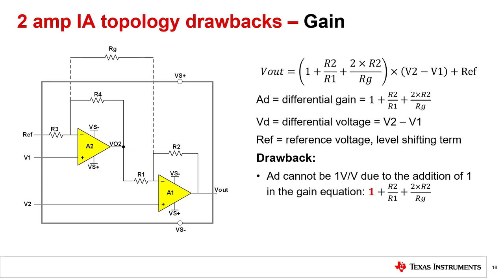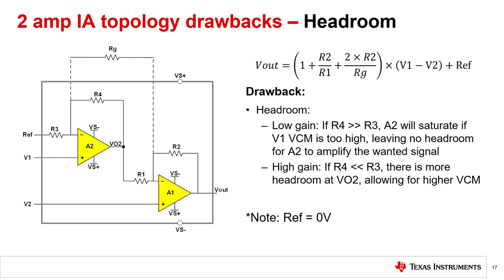To recap, the 2-amp IA topology yields an output where the differential voltage Vd is amplified by the differential gain Ad. Note that the gain of the circuit cannot be unity or less than 1 due to the addition of 1 in the gain term — that is one disadvantage of this design. Another disadvantage is that the common mode input voltage range must be traded off against gain, assuming the reference voltage is grounded. Amplifier A2 must amplify the signal at V2 by 1 plus R4 over R3. If R4 is much greater than R3, A2 will saturate if the V2 common mode signal is too high, leaving no headroom to amplify the wanted differential signal. For high gains where R4 is much less than R3, there is correspondingly more headroom at node V02, allowing larger common mode input voltages.